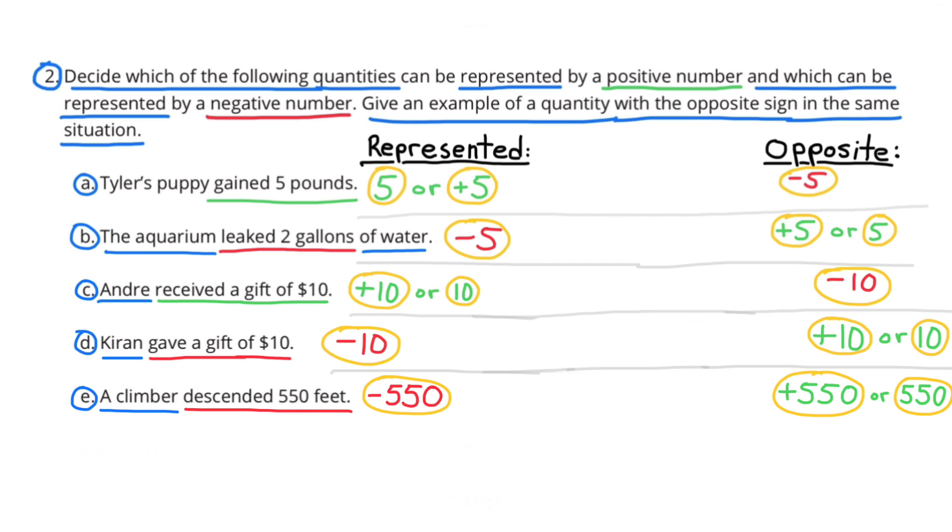E. A climber descended 550 feet. Descending would be negative so negative 550 and the opposite of negative 550 is positive 550.